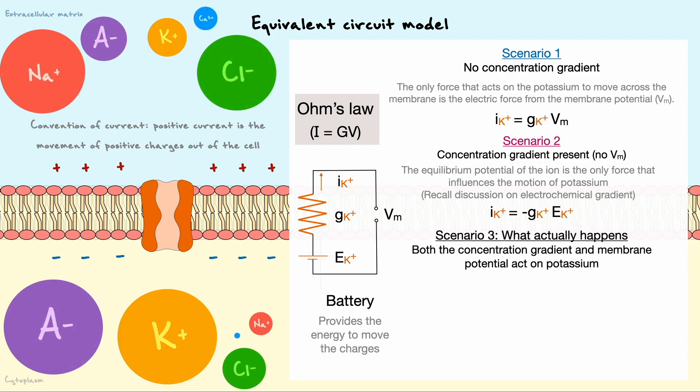Finally, let's consider the scenario where the concentration gradient and the membrane potential both act as forces on the potassium. In this scenario, the net current through the channel will be equal to the sum of the currents found in scenario 1 and 2. By factoring the conductance, we arrive at this expression where the current is equal to the product of the conductance and the difference between the membrane potential and the equilibrium potential of potassium.